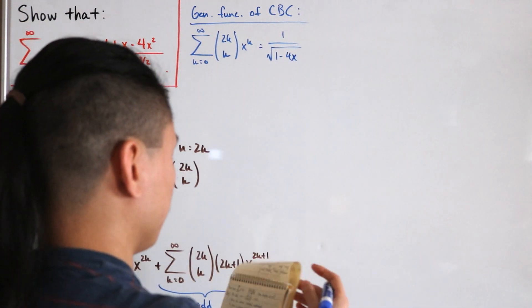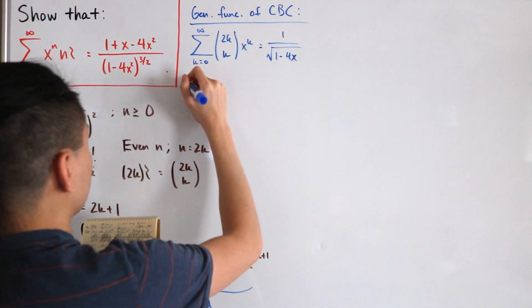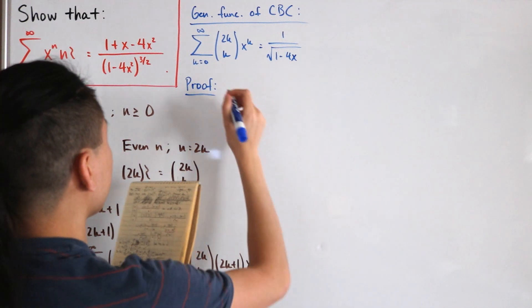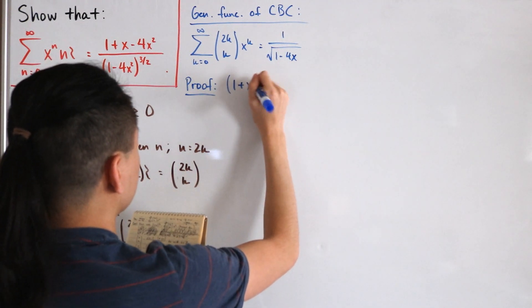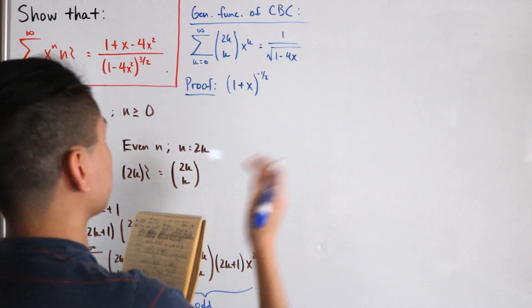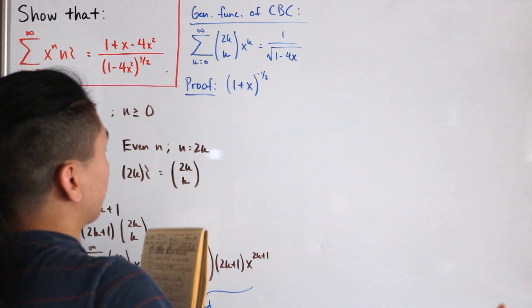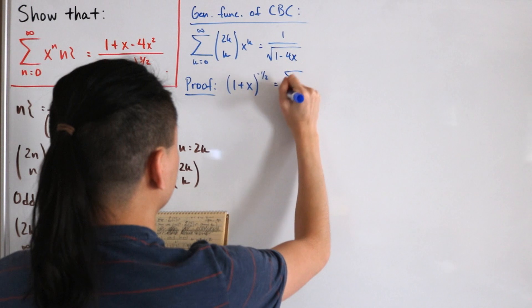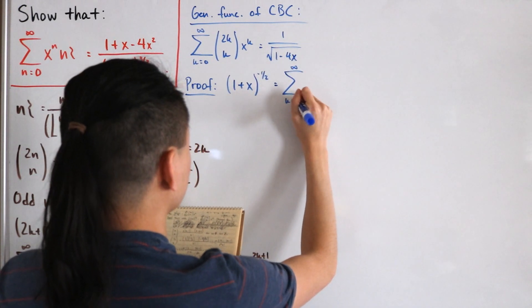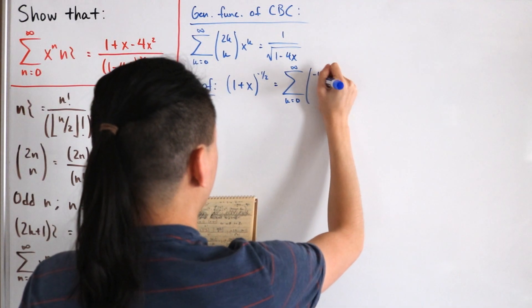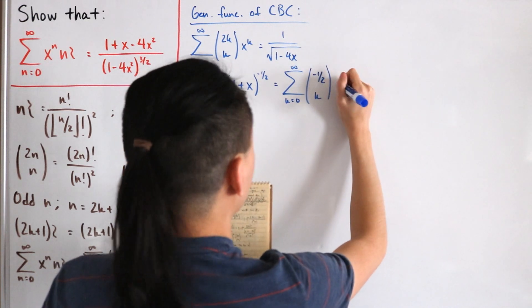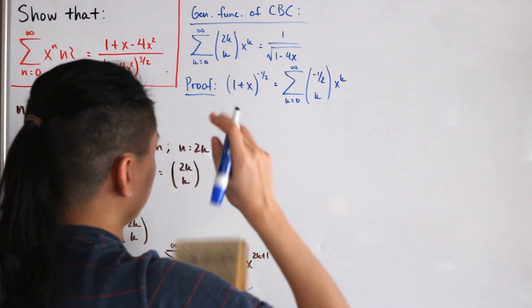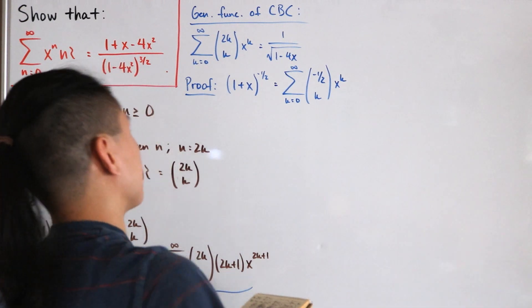To prove this, we start with the binomial theorem applied to (1 + x)^(-1/2), which expands as Σ_{k=0}^∞ C(-1/2, k) · x^k. Here we're dealing with a negative rational exponent, so we use the generalized binomial coefficient formula: C(α, k) = α(α-1)···(α-k+1) / k!, valid for any real α and non-negative integer k.